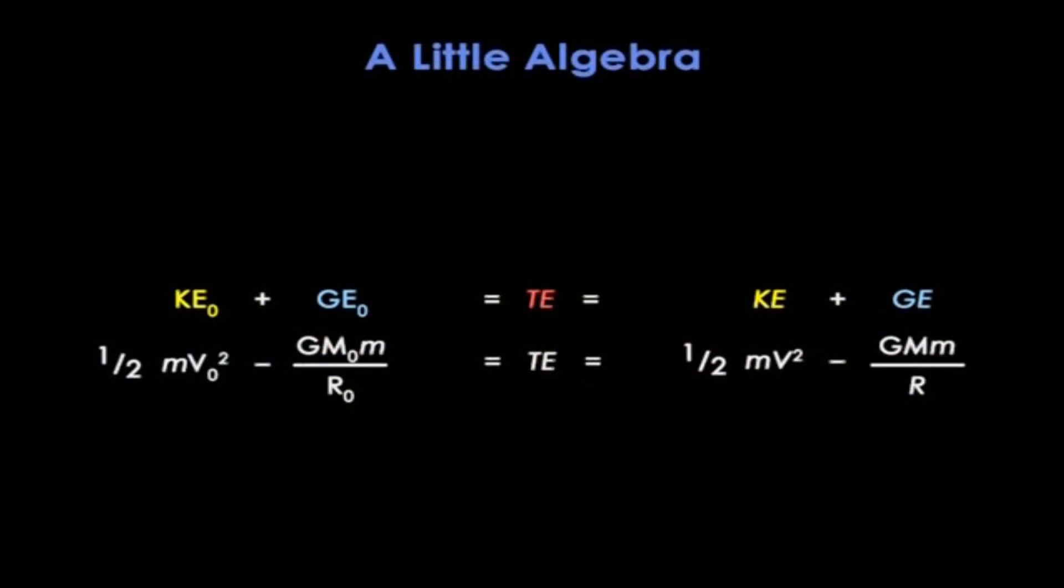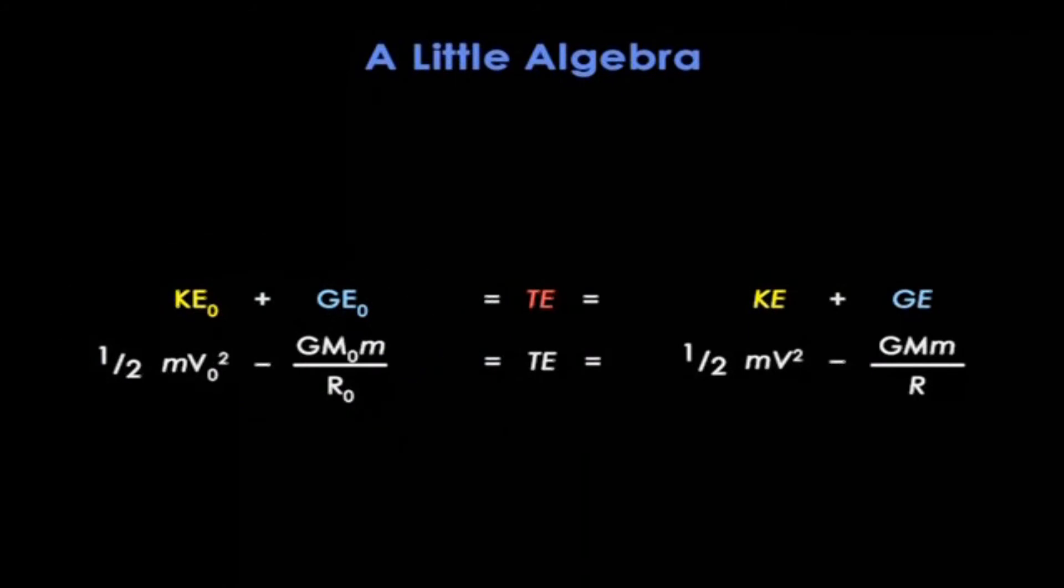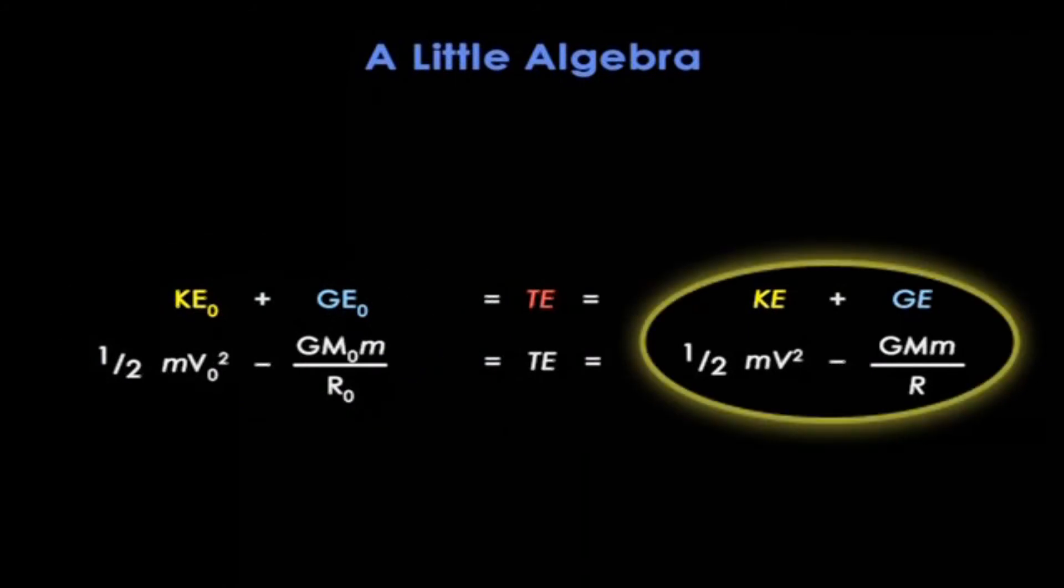We start with this equation for the outermost rock's total energy, the sum of its kinetic and gravitational energies. But now, since the total energy is constant, then the sum today, on the left, with subscript nought, equals the sum at any later time, on the right, with no subscript. Notice, right off the bat, we can cancel all the little m's. The outermost rock's mass isn't relevant.